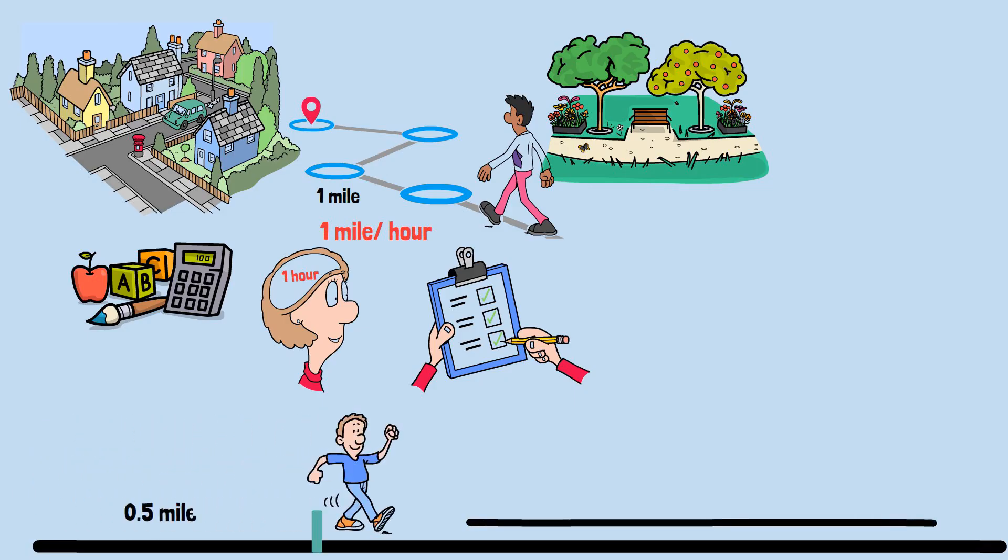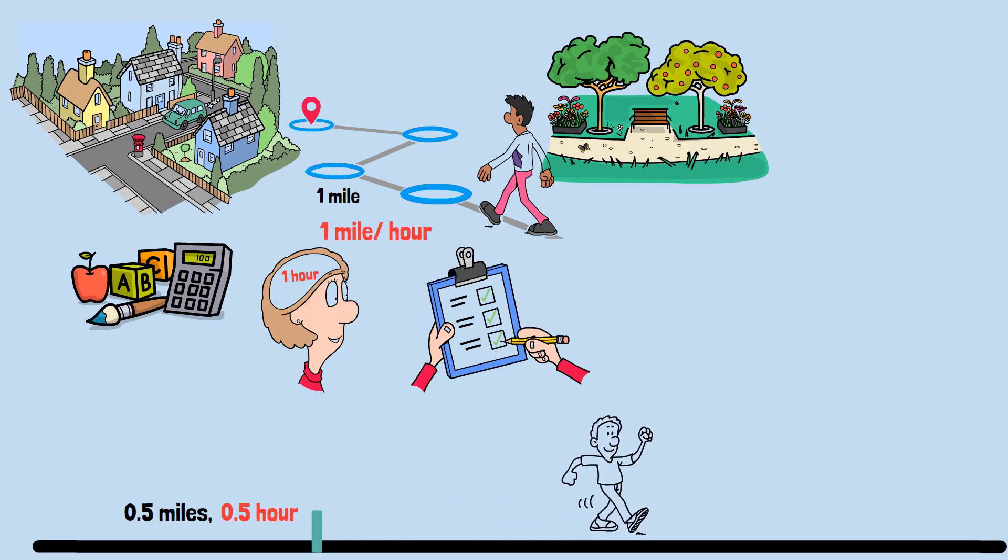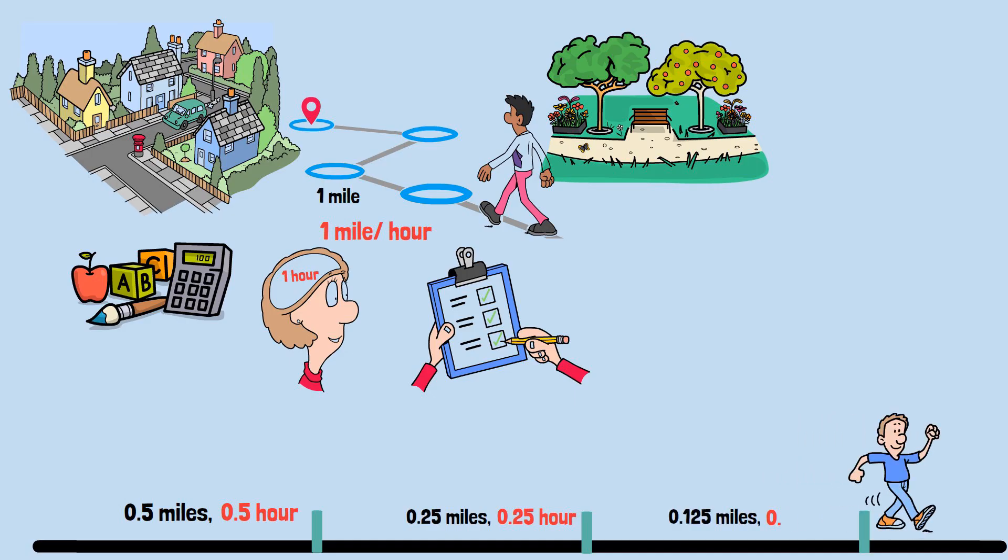First he walks halfway to the park, that is 0.5 miles taking 0.5 hours. Then he walks half the remaining distance, that is 0.25 miles taking 0.25 hours. Then half of what's left, that is 0.125 miles taking 0.125 hours, and so on forever.